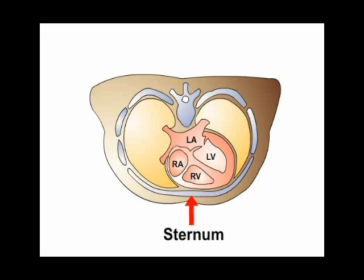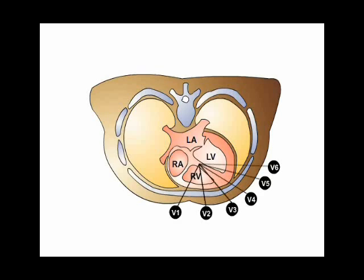The six chest leads, V1 to V6, examine the heart in this horizontal plane. Therefore, V1 and V2 face the anterior surface of the right ventricle, V3 and V4 look at the anterior surface of the left ventricle, while V5 and V6 look at the lateral surface of the left ventricle.